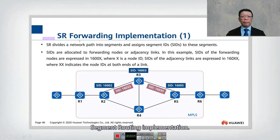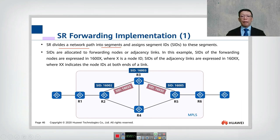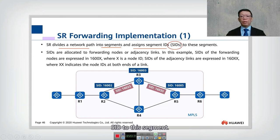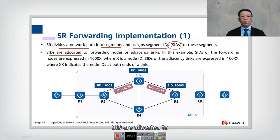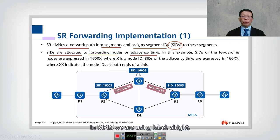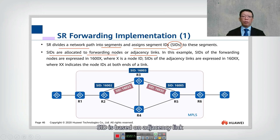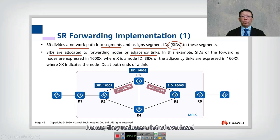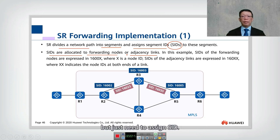Let's look into the segment routing implementation. Segment routing divides the network path into segments, hence we have what we call segment IDs — SIDs. Each segment is assigned an SID. SIDs are allocated to a forwarding node or an adjacency link. In MPLS we use a label, but in segment routing we use SIDs based on adjacency links and forwarding nodes, which reduces a lot of overhead because we no longer need to distribute labels.